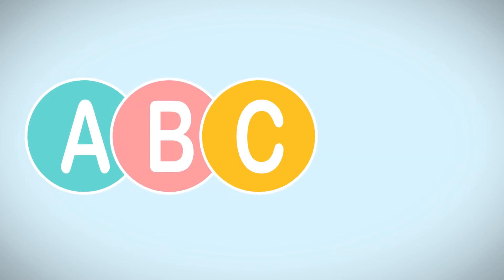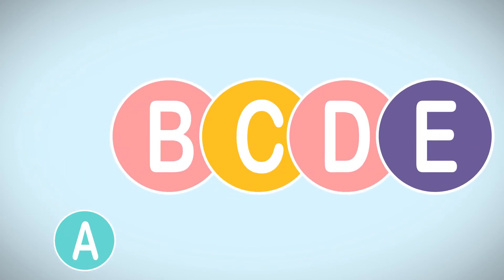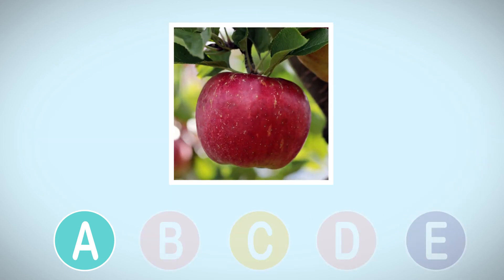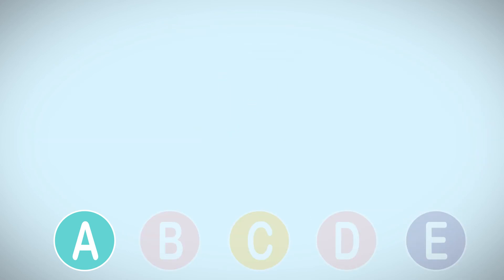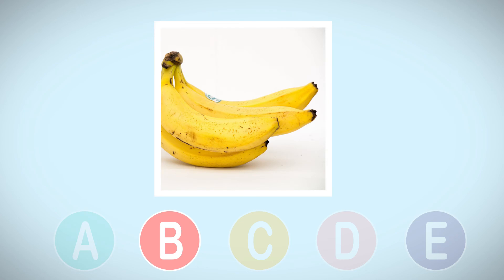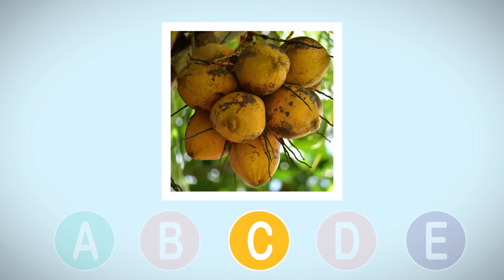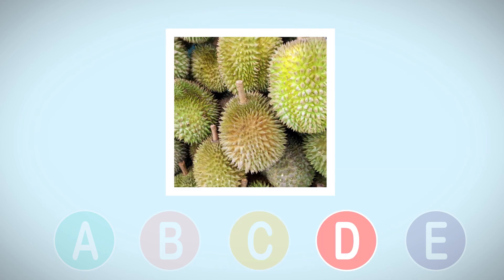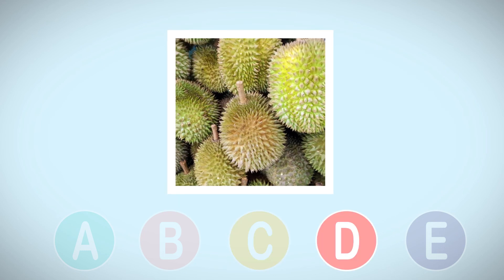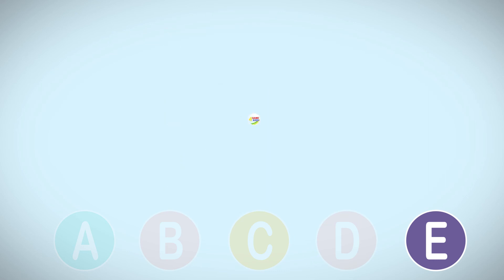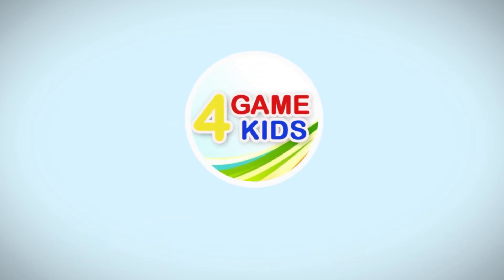We have learned the letters A, B, C, D, and E. A is for apple, B is for banana, C is for coconut, D is for durian, E is for eggplant. Okay kids, thank you for watching — see you in the next video!